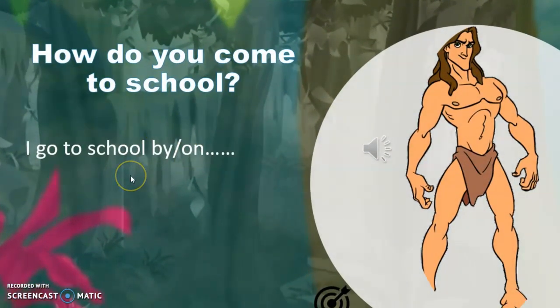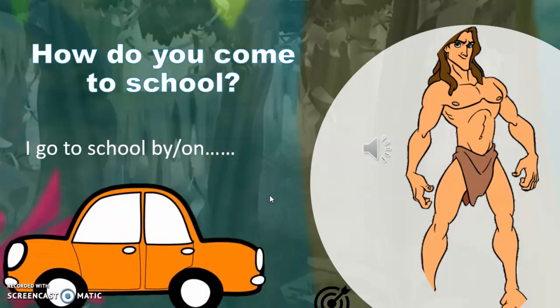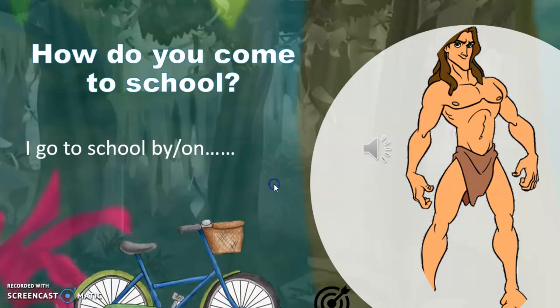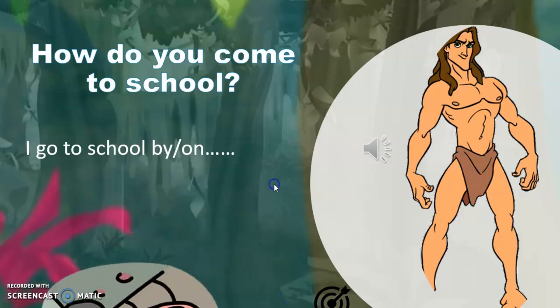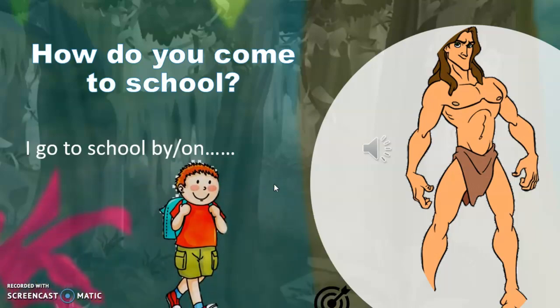Here's the question with another zoom effect: 'How do you come to school?' This is a review part. The students will answer: I go to school by taxi, I go to school by car, I go to school by bike, I go to school by subway, I go to school by bus.